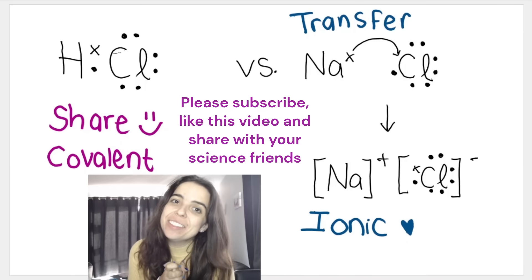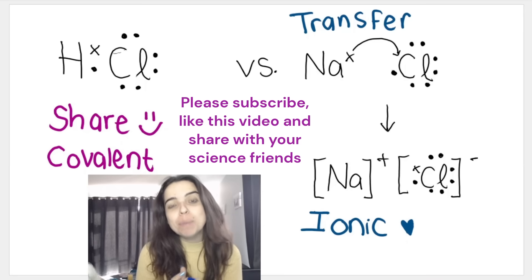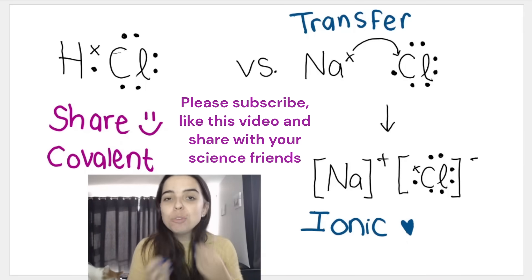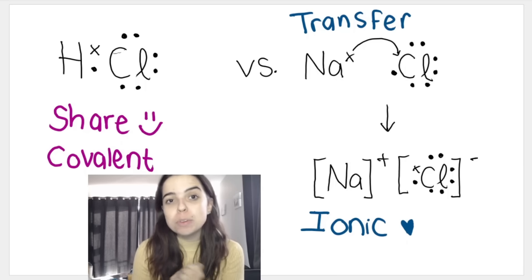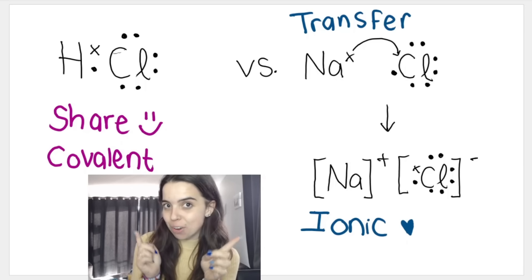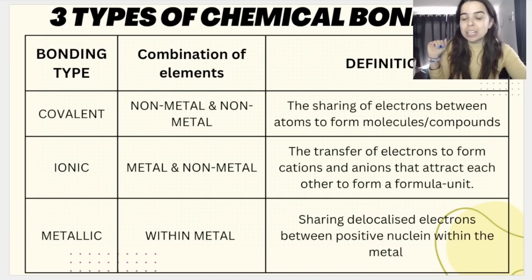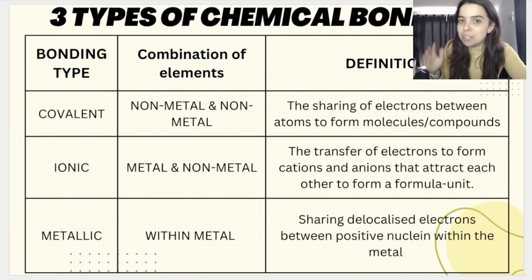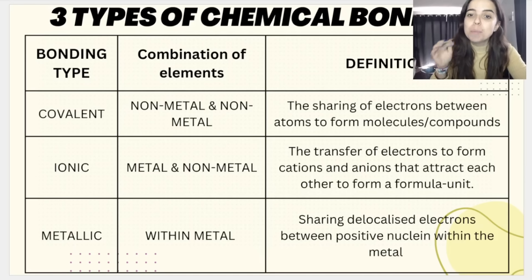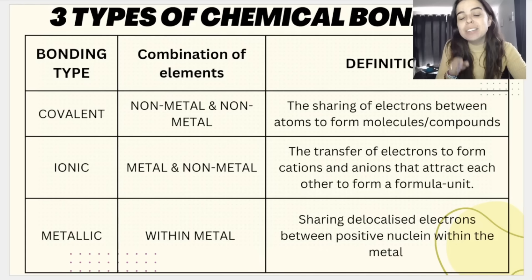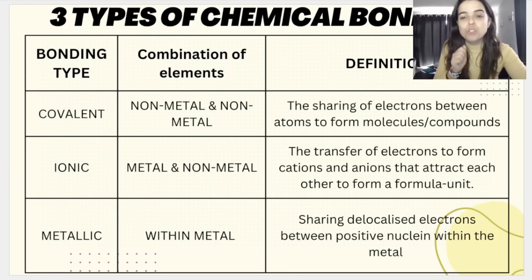Hello everyone and welcome to another video with me, Ms. Martens. Today we're going to continue with chemical bonding, focusing on covalent bonding. In the last lesson, we introduced chemical bonding and looked at the three different types — if you missed that lesson, I'll link it here. Covalent bonding is defined as the sharing of electrons between atoms to form molecules or compounds.